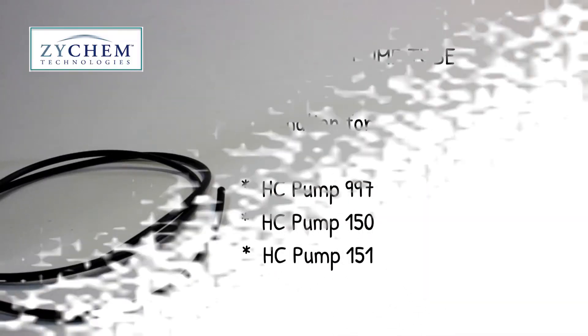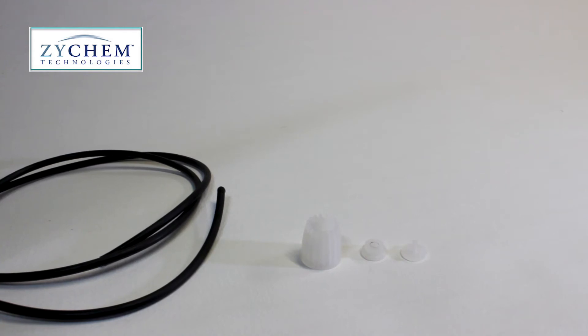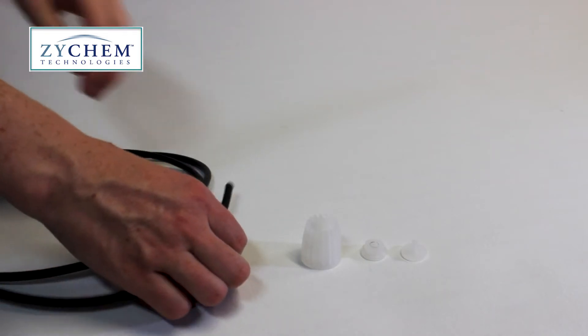The discharge tube on these pumps needs to be replaced every three months to prevent it splitting, because the chemicals used through these pumps are corrosive. The process is quite simple.